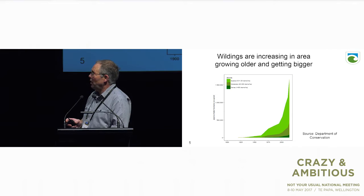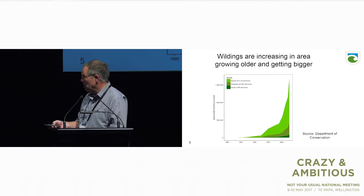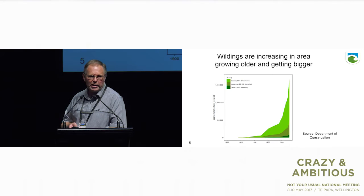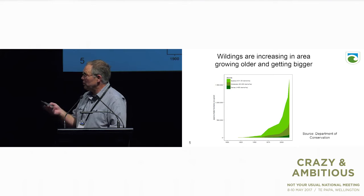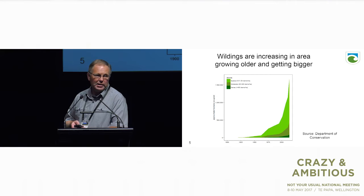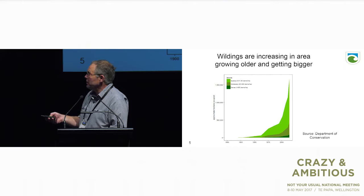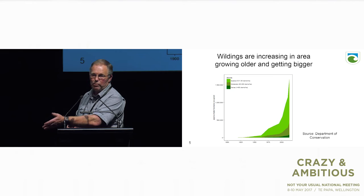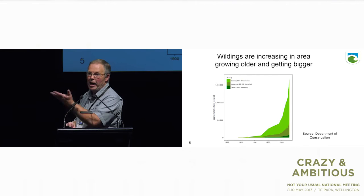This graph shows wilding conifers are increasing in area, growing older and getting bigger. Starting from 1930 to 2015, they've been spreading at 6% per year compounding until we're actually adding about 90,000 hectares a year—the size of about one and a half Kahurangi Forest Parks. Most is light infestation, but as trees get older sparse becomes medium and medium becomes dense.